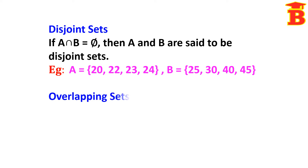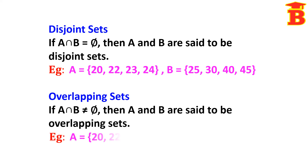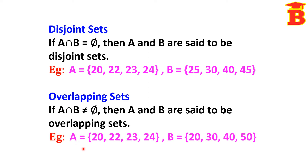Next, overlapping sets. If A ∩ B is not equal to the null set — that means there is a common element — then A and B are said to be overlapping sets. For example, take set A = {20, 22, 23, 24} and set B = {20, 30, 40, 50}. Here, 20 is the common element, so the intersection is not null. Therefore, the sets are overlapping sets.